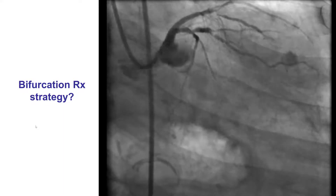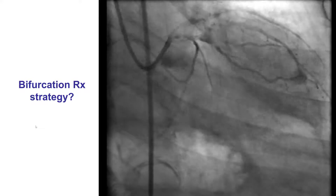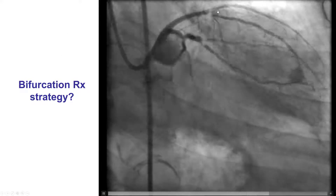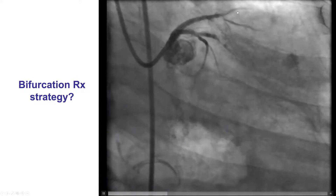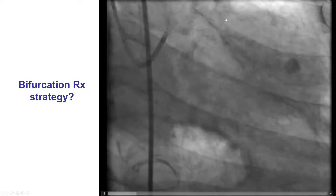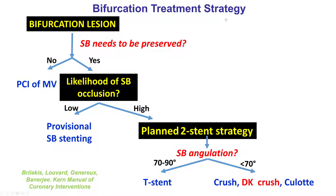We decided to start with revascularization of the LAD. This was a 1-1-1 bifurcation with a decent-sized diagonal branch, although the ostium did not appear to be extremely diseased. This is one way to think about how to treat bifurcations: the first question is whether the side branch is large enough or important enough to require preservation. If yes, then is it likely to occlude when the main branch is stented? If so, a planned two-stent strategy is used; otherwise, provisional strategy is done.